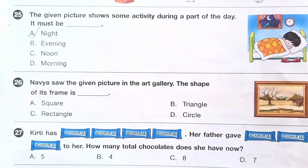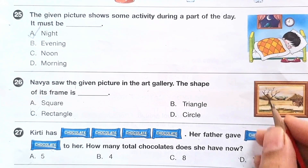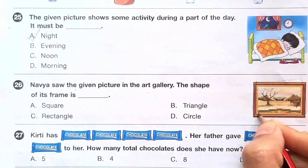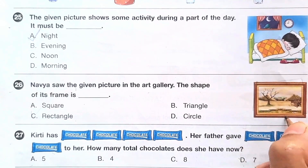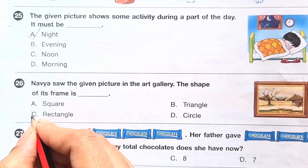Question number 26: we saw the given picture in an art gallery. The shape of its frame is — what is the shape of this frame? This is a rectangle. So the answer is option C.